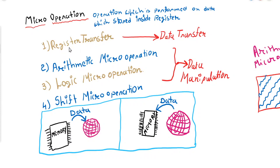How many types of Micro operations are there? There are four types: Register Transfer Micro operation, Arithmetic Micro operation, Logic Micro operation, and Shift Micro operation.